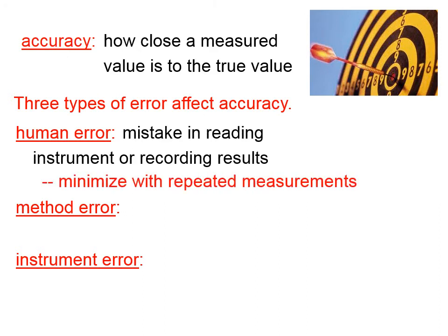There are three types of error that can affect accuracy. Human error means that you've made a mistake in reading the instrument or recording the results. Human error is entirely because you weren't careful enough. We can minimize human error by doing repeated measurements.